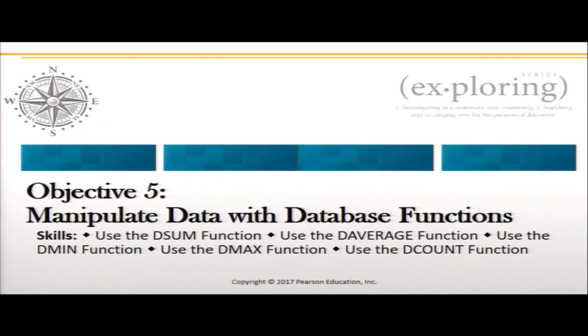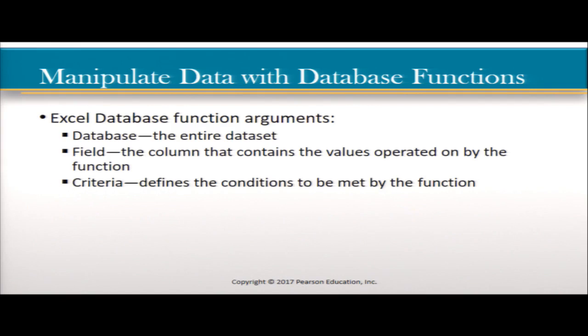Now we're going to move on to manipulating data with database functions: DSUM, DAVERAGE, DMIN, DMAX, and DCOUNT. Everything begins with D because it stands for database. The database functions have three arguments: database, field, and criteria. Database means the entire dataset. Field means the column containing values operated on by the function. Criteria defines the conditions to be met.